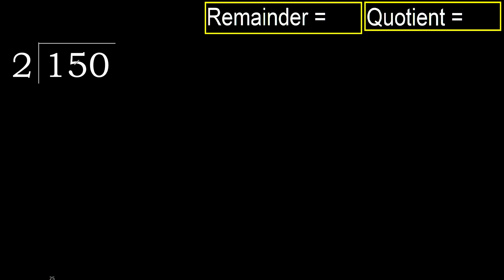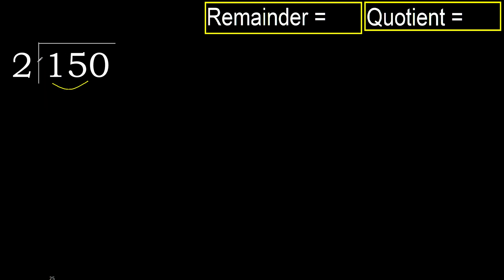150 divided by 2. 1 is less, therefore next. 15 is not less, therefore with 15: 2 multiplied by which number is nearest to 15 but not greater?